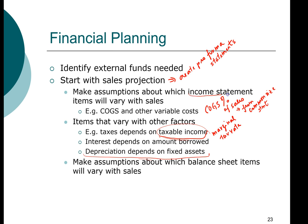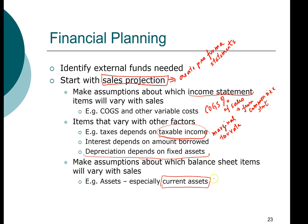Once you have the income statement completed, we look at the balance sheet items and ask the same questions. Since we start with sales projections, we ask which balance sheet items will vary with sales. On the asset side, current assets are likely going to vary with sales — especially accounts receivable and inventory. Then we consider borrowing: do we want to maintain the current debt ratio, borrow more money, or lower our leverage? These are important decisions for a company.